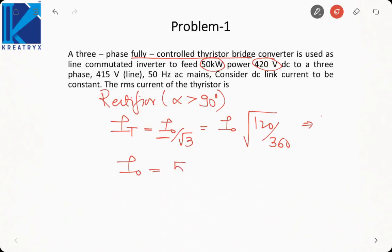It will be 50,000 by 420. This will come out to be 50,000 by 420 is actually 5,000 by 42. So this becomes 119 ampere. Then what will be the thyristor current? It will be 119 divided by root 3. So it will come out to be 68.73 ampere.